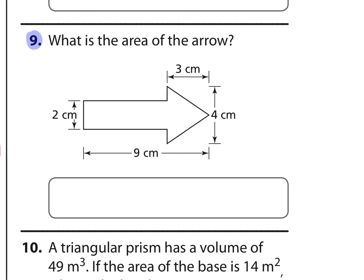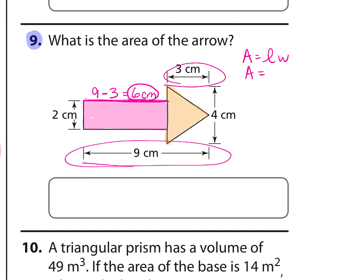Number 9. What's the area of the arrow? The first thing I might notice is that I could separate this arrow into two different shapes: one rectangle and one triangle. Let's start with the rectangle. The area of a rectangle is length times width. We don't know the length, but what we do know is that this side is what remains from the total length of 9 centimeters minus this, which gives 6 centimeters. So 6 centimeters times the width of 2 centimeters means that area is 12 square centimeters.